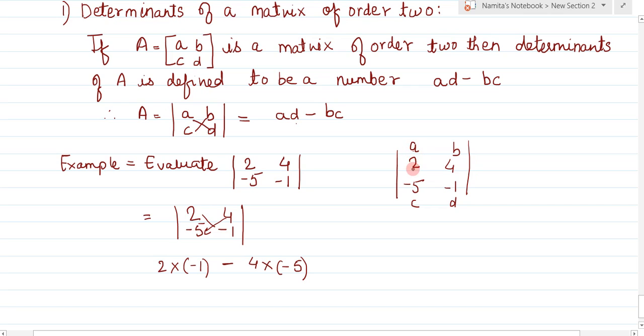So a times d means 2 times -1, and b times c means 4 times -5. This equals 2 times -1 which is -2, minus 4 times -5 which is -20.